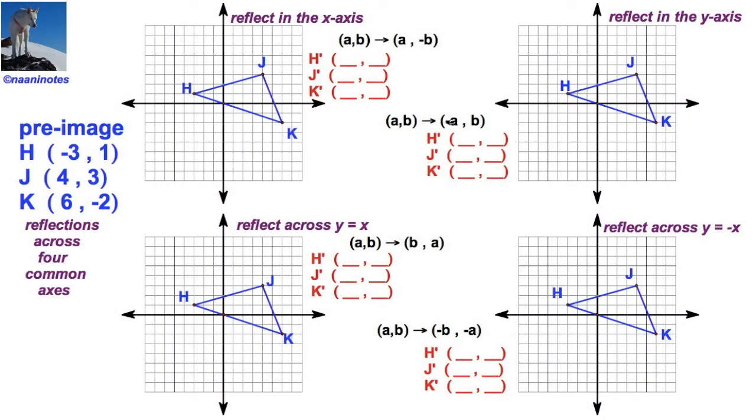Welcome to Nonnie Notes. We're going to explore reflections across four very common axes. We're going to do this using the same pre-image, the triangle HJK that we have pictured here in blue.